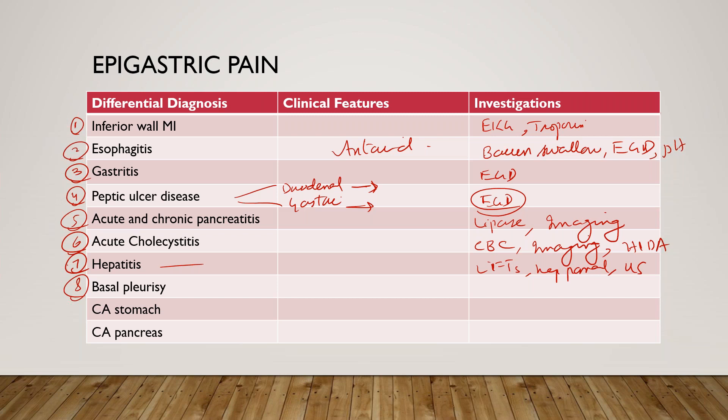Eighth is basal pleurisy. The patient will complain of pain aggravated by coughing and breathing. A pleural rub may be present, and if you do a chest X-ray it can show consolidation.